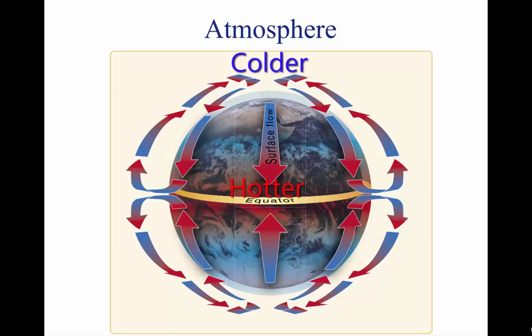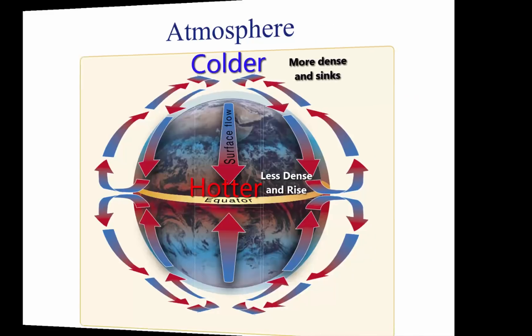Solar heating causes higher temperatures in the equatorial areas, which causes the air to be less dense and rise. As the warm air flows toward the poles, it cools, becoming denser, and sinks back toward the surface.